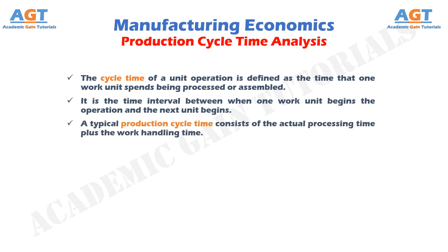A typical production cycle time consists of the actual processing time plus the work handling time — for example, loading and unloading the part in the machine. In some processes, such as machining, time is also required to periodically change the tooling used in the operation when it wears out.